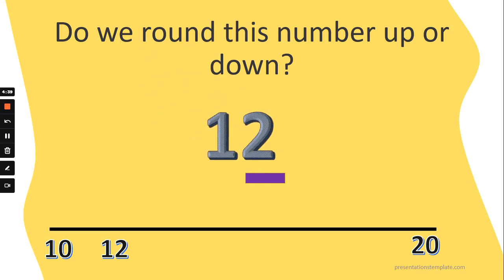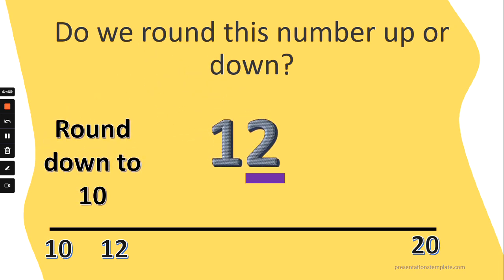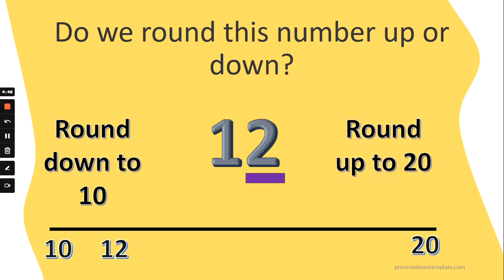What about the number 12? Two ones. Does 12 round down to 10? Is it closer to 10? Does it round up to 20? Is it closer to 20? Take a look at the number line and think about your answer. One, two, three or four — round down to the tens we just came from. Hopefully you know that 12 is closer to 10, so we say 12 rounds down to 10. Well done.